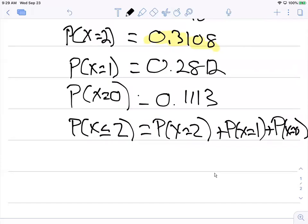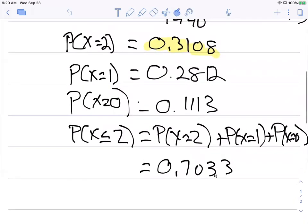Now we can add those up and find that the probability that X equals one, zero, or two is equal to 0.7033. That would be our final answer for the probability there.